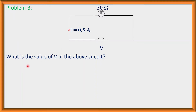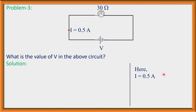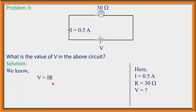Third problem: what is the value of V in the above circuit? The resistance of this bulb is 30 ohm and the electric current flowing through this circuit is 0.5 ampere. We have to determine the voltage of this source. Given: I = 0.5 ampere, R = 30 ohm. From Ohm's Law, V = I × R.